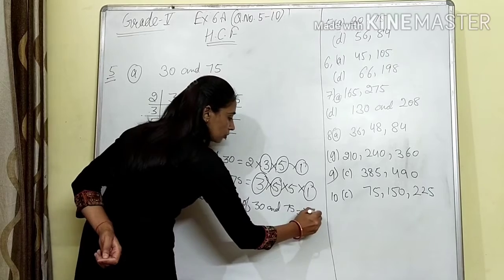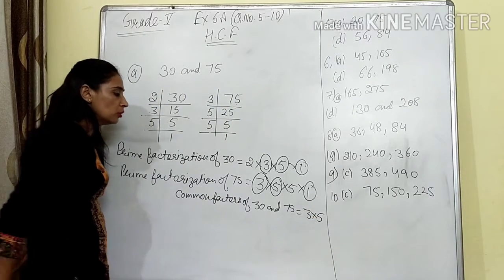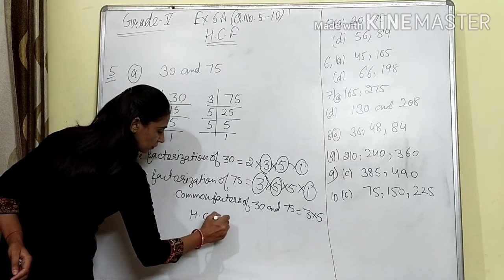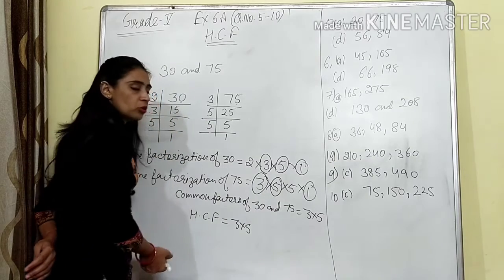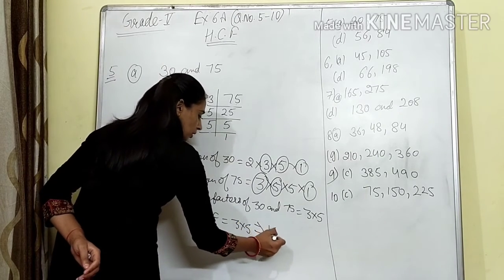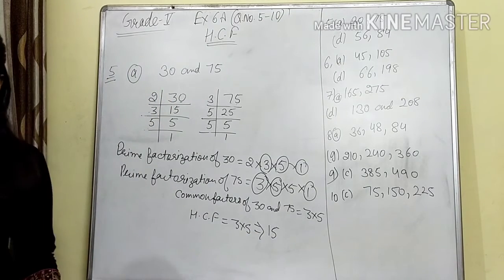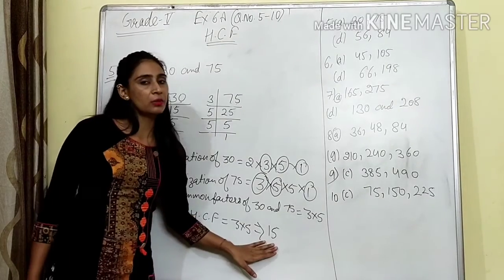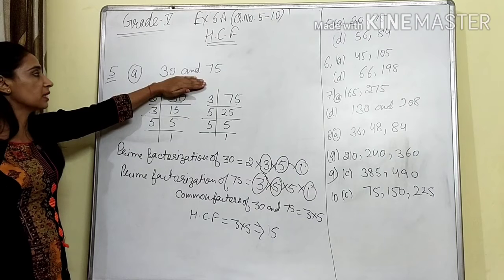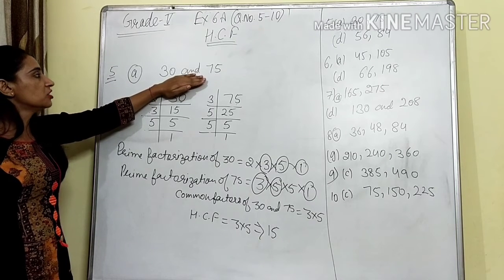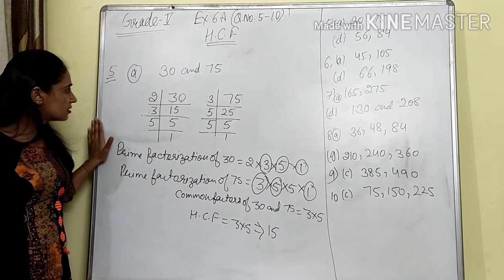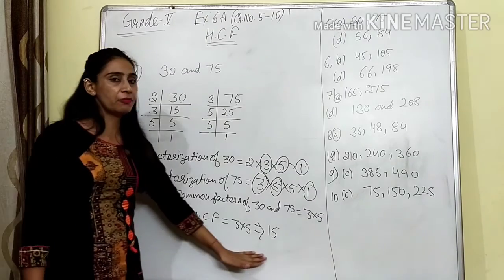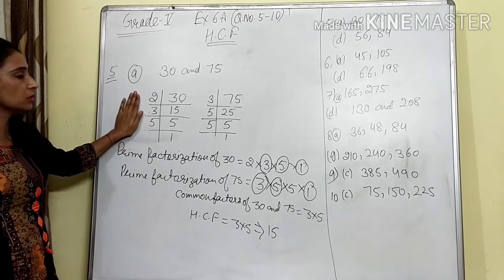The common factors of 30 and 75 are 3 × 5. HCF is equal to 3 × 5 = 15. So 15 is the HCF for 30 and 75. That means 15 is the greatest common divisor which will divide these two numbers. This is how we find HCF using prime factorization — I have explained each and everything slowly.